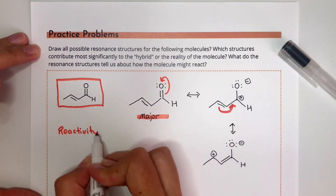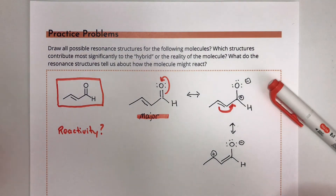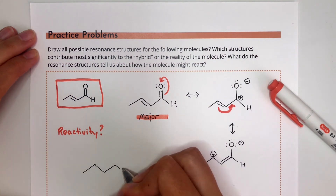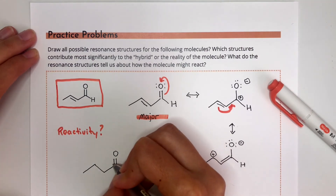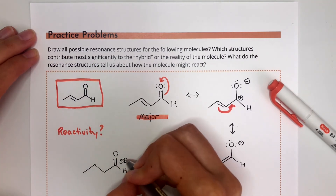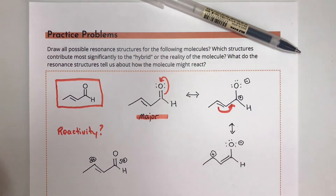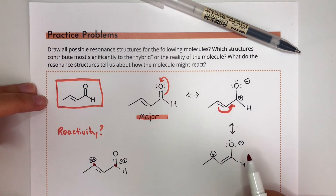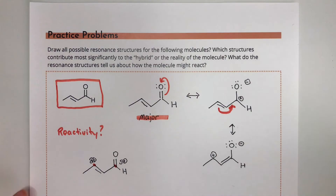Ranking these three resonance structures: the first one with no separated charges is the major contributor to the resonance hybrid. The other two structures both have an atom with an empty octet and separated charges, so they're minor contributors and about equal to each other. What do these resonance structures say about the reactivity of this molecule? The two minor resonance structures show us where there are areas of partial positive charge in the molecule — I've drawn a delta plus on these two carbon atoms — showing us where this molecule might be susceptible to attack by something electron rich.